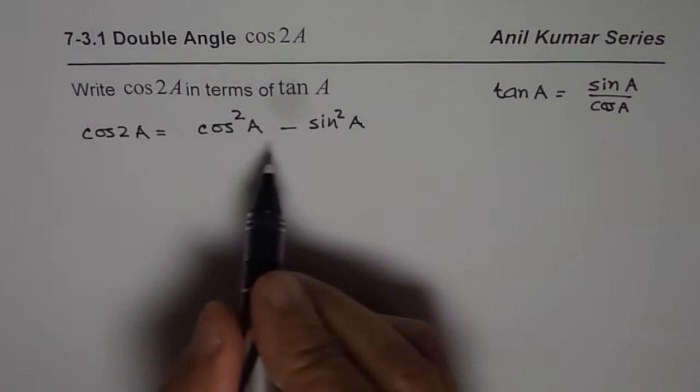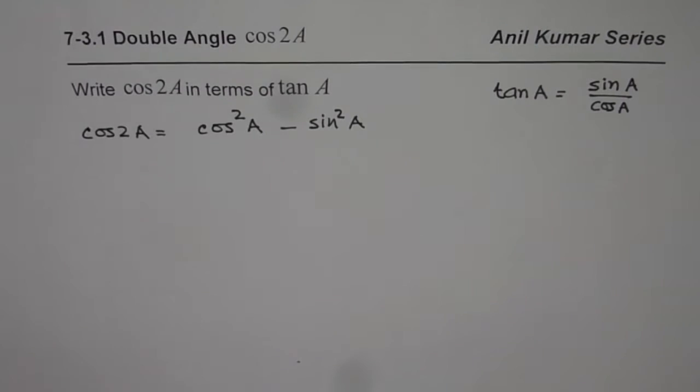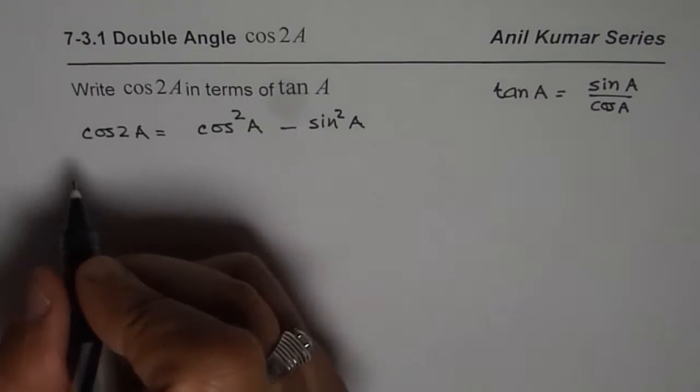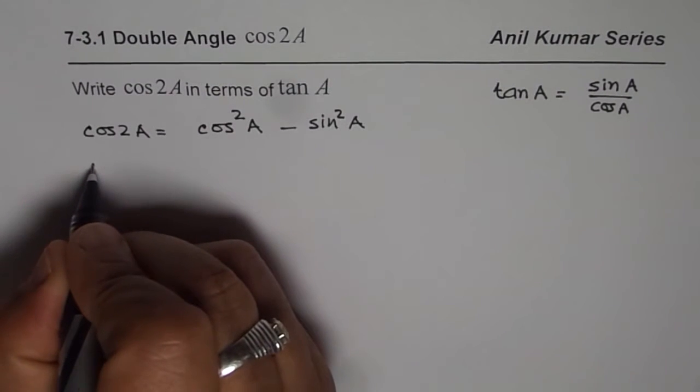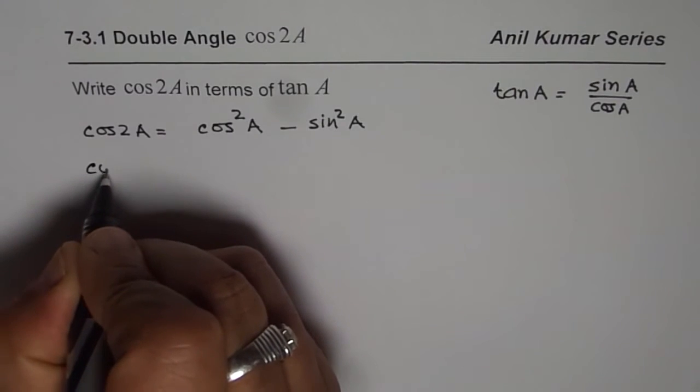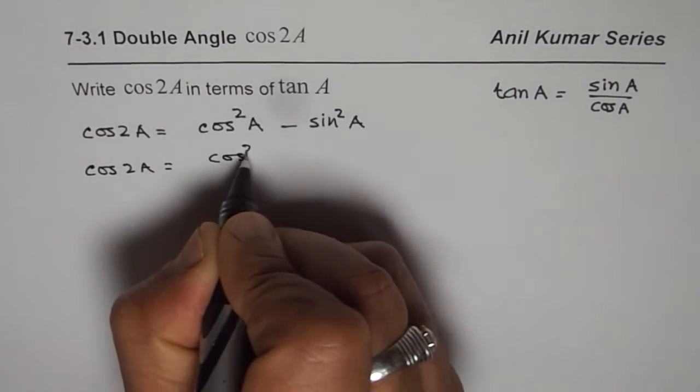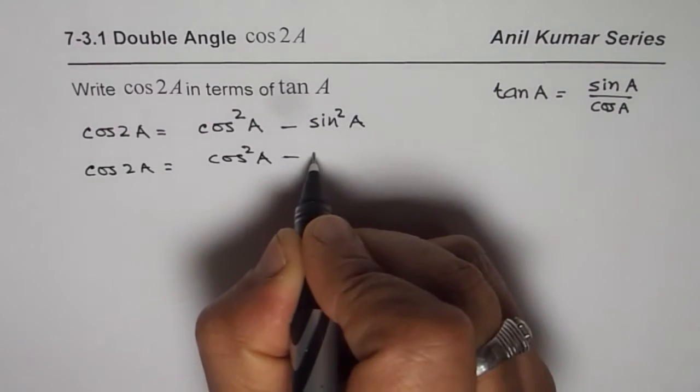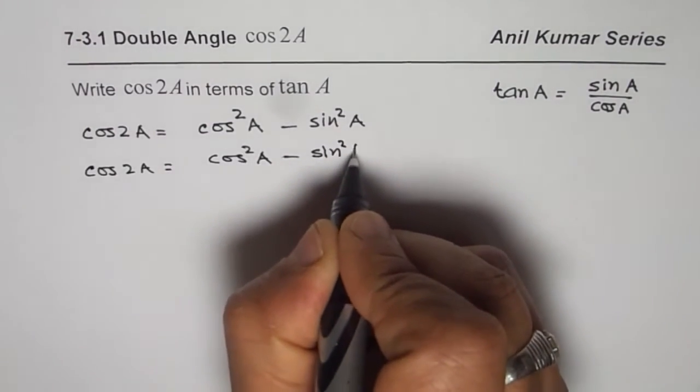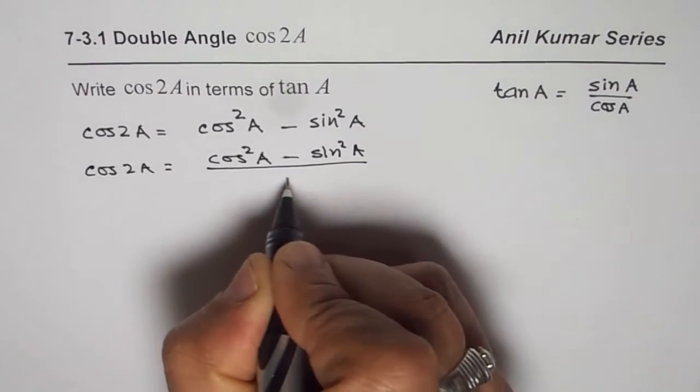Now from here, how can we get tan? As we did in the sin 2A formula, we will do here also. We can write this equation as—you guessed it—cos²A minus sin²A divided by 1.